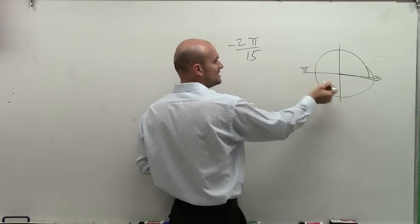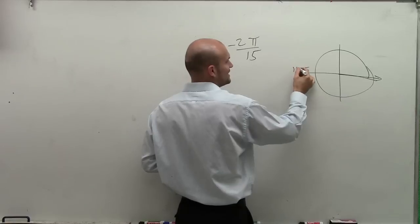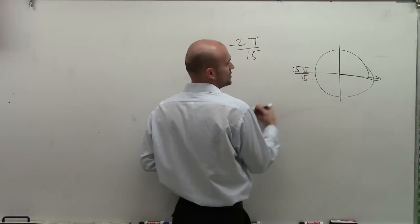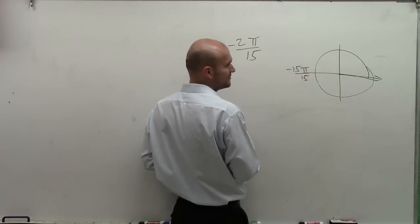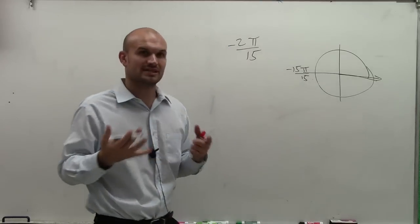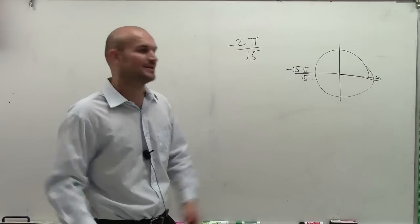But since our denominator is 15, that means I'm breaking this up into 15ths. So I can write this as 15 over 15. Now, since we're going in the negative direction, I'm just going to give that a negative value to remind me that we're going in the negative direction.